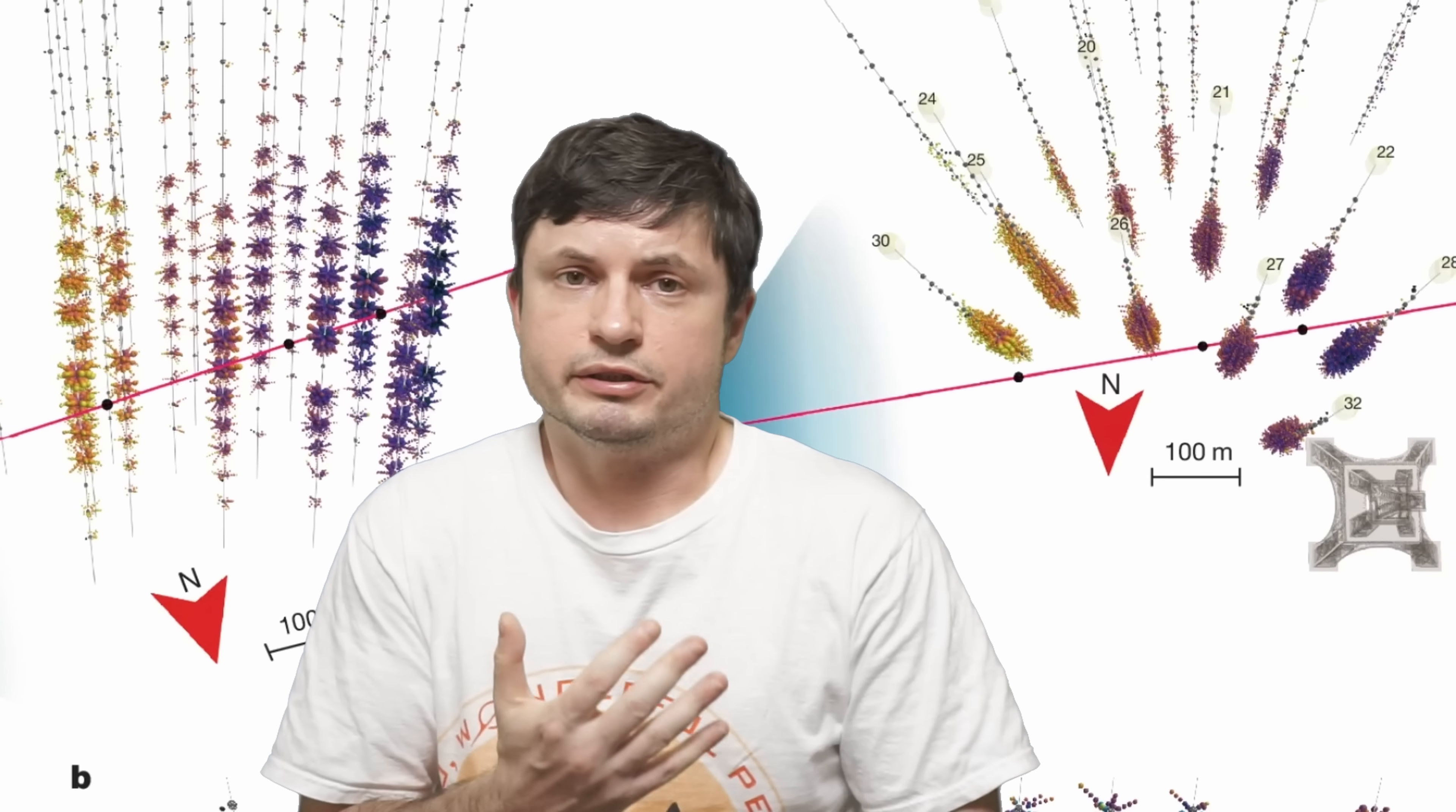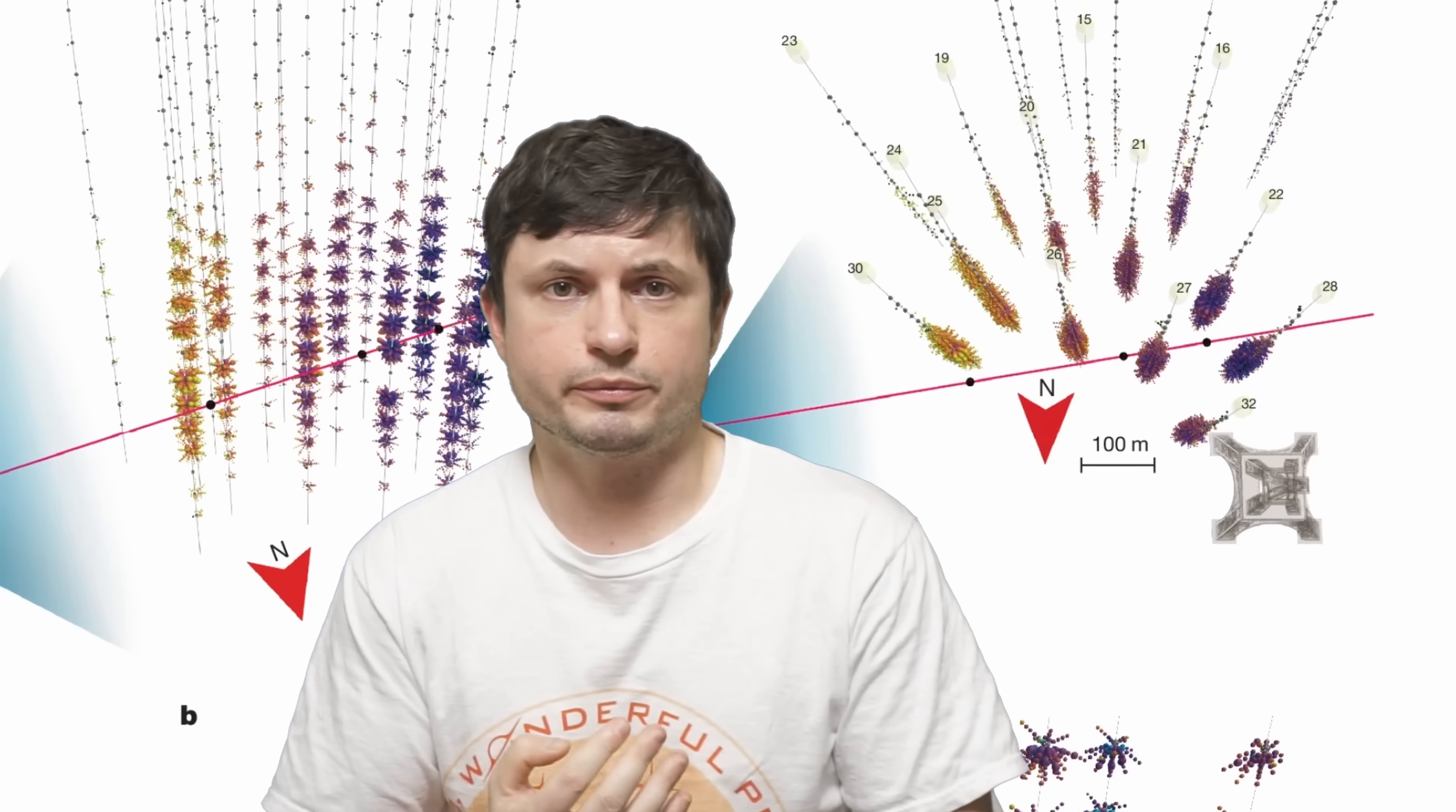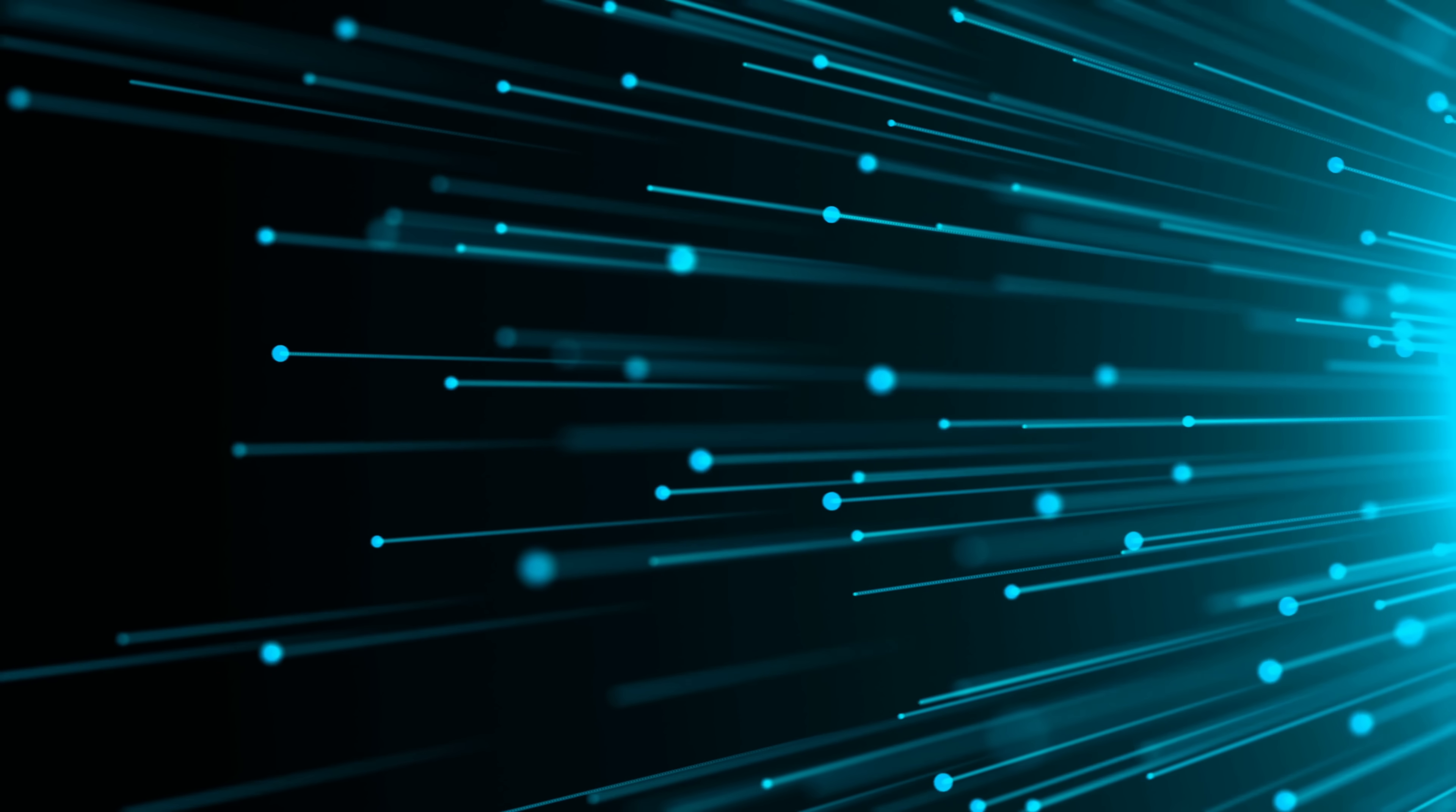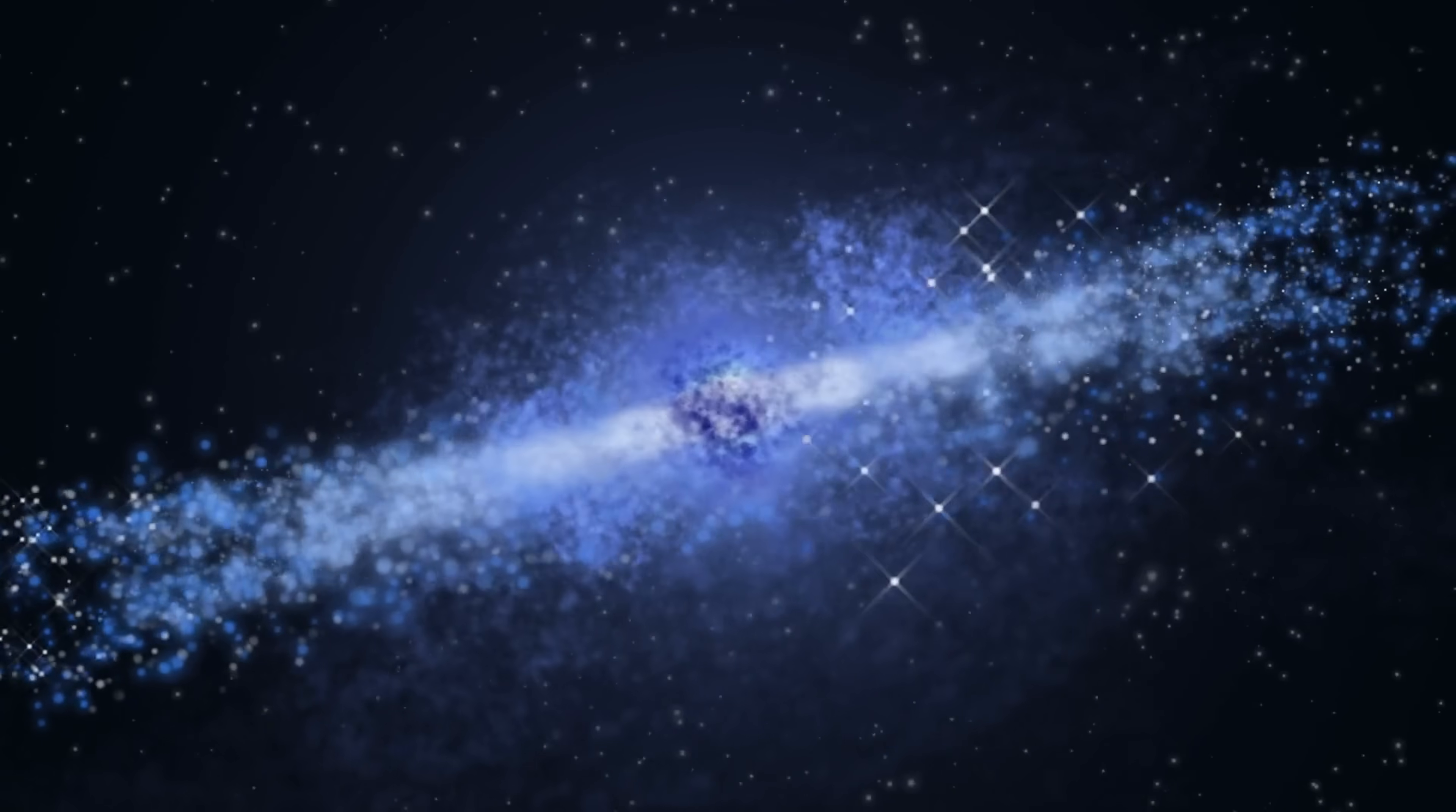But basically, by tracing this event and by trying to figure out what could have created this, they realized that it must have come from some kind of a cosmic neutrino. And here, cosmic neutrinos are always believed to be generated by various cosmic rays, very often the result of some kind of an extragalactic source, such as what we refer to as cosmic accelerators. So basically, some kind of a super powerful source, such as this supermassive black hole.